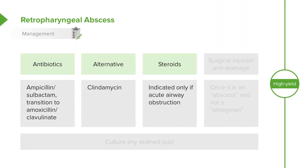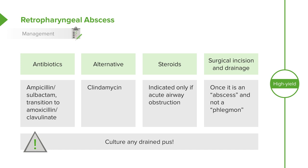Steroids are indicated only if there's acute airway obstruction — they don't seem to affect the course of illness otherwise, and we want to avoid blunting the immune response in bacterial illness. If the abscess is growing and not improving on antibiotics, it needs to be drained. If it looks like a frank abscess, ENT may decide to drain it empirically. Don't forget to culture the drainage — it's very helpful if the bacteria don't respond to your antibiotics. Blood culture remains very unlikely to be positive.